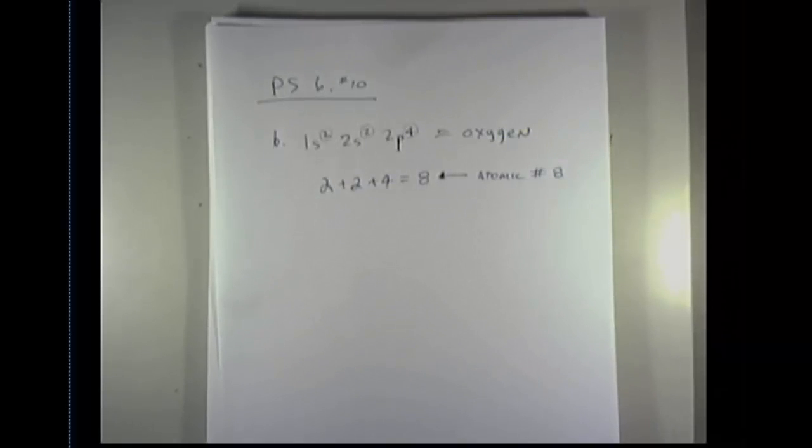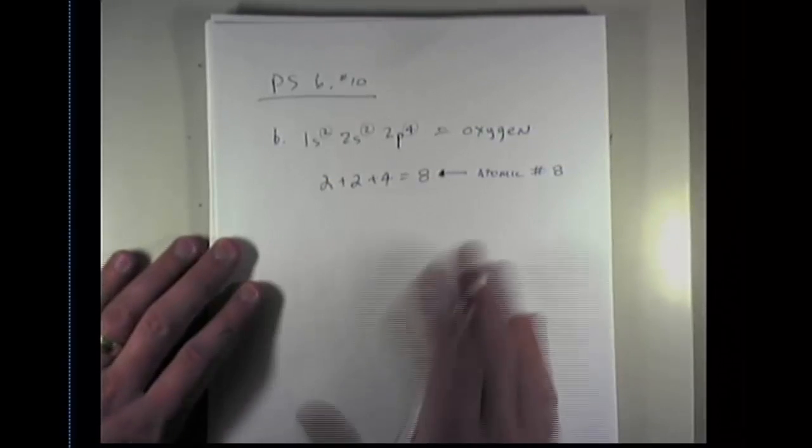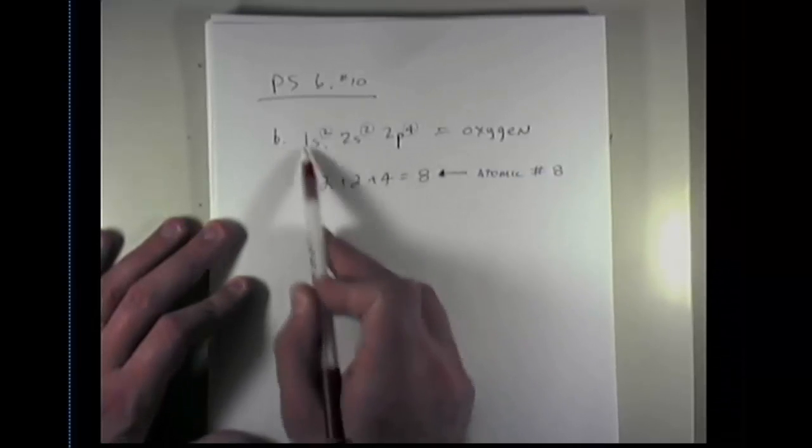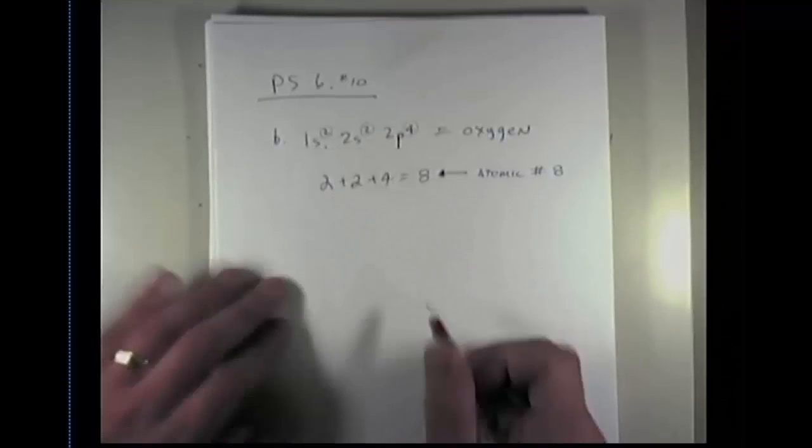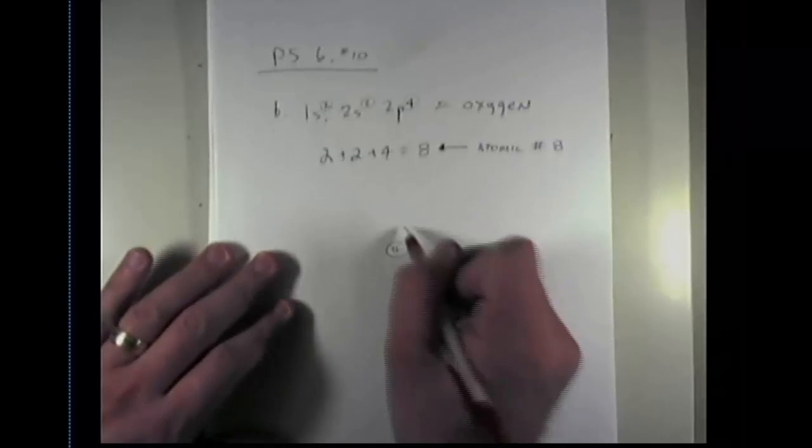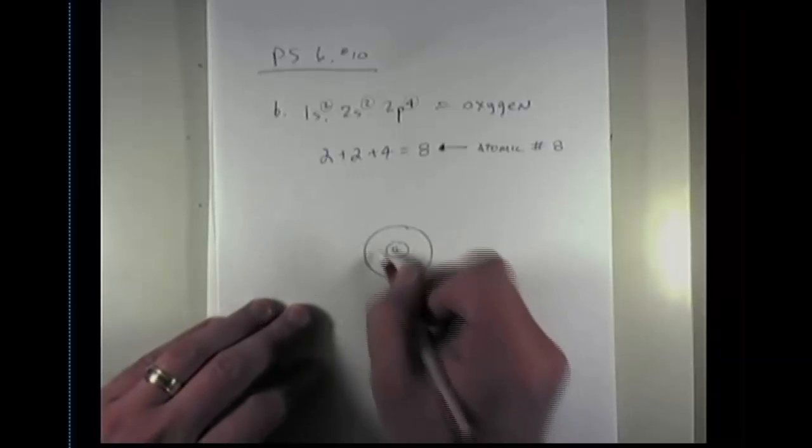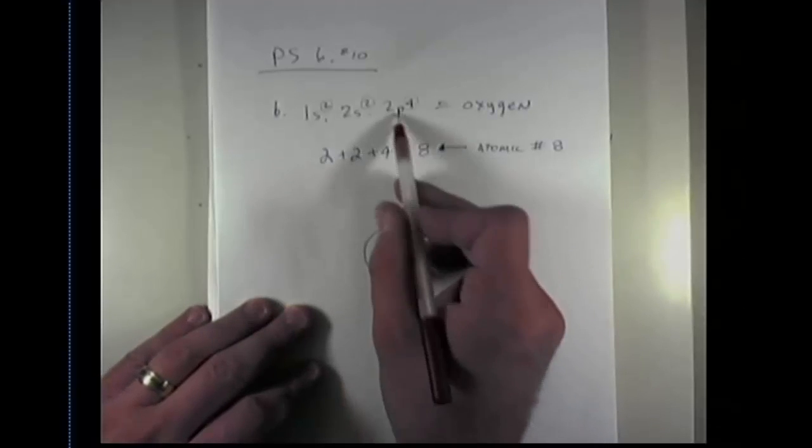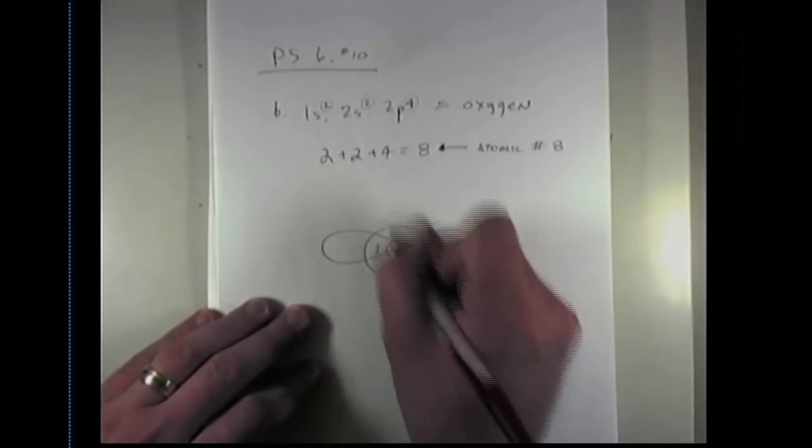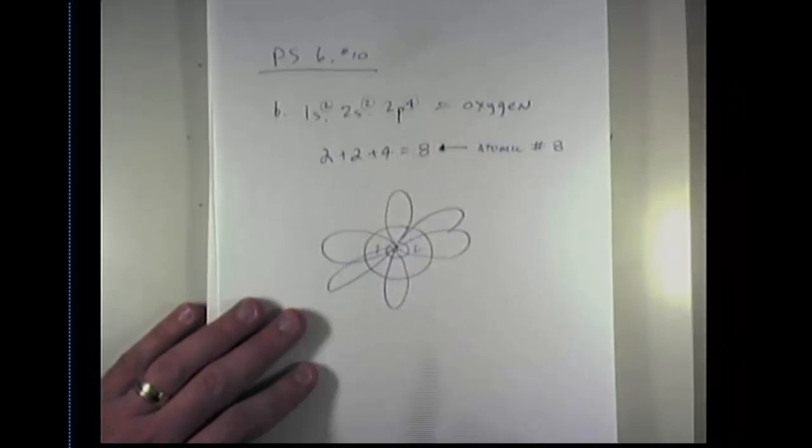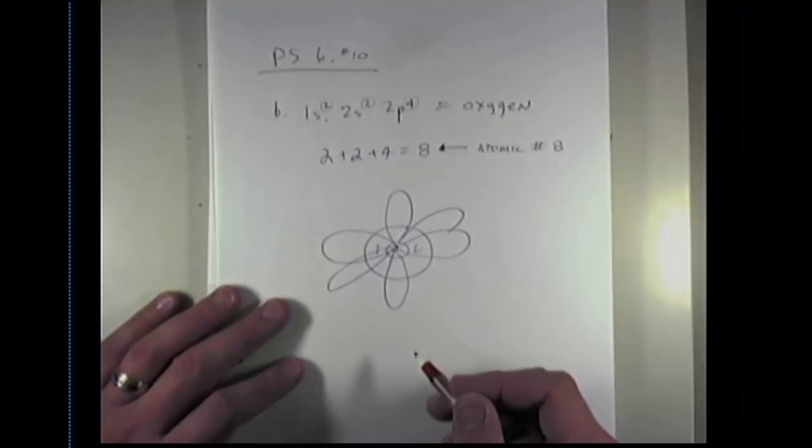The next part of the question is asking how many unpaired electrons does it have? Well, you should remember that these electrons fill up their orbitals from the innermost orbital to the outermost orbitals in order. So this 1s orbital, which is a sphere, has two electrons in it, which are both paired. There's a 2s orbital, which is larger and also spherical outside of the 1s orbital, and these two electrons are also paired inside that orbital.